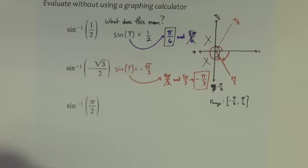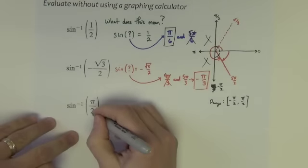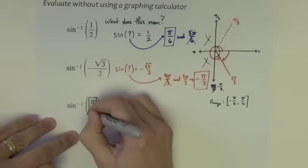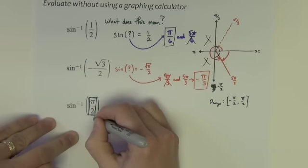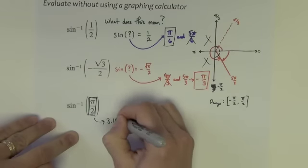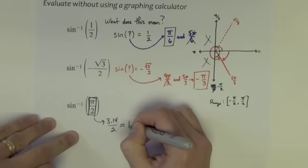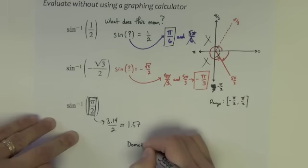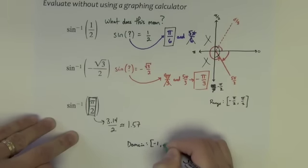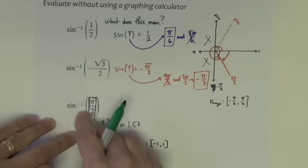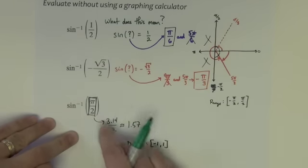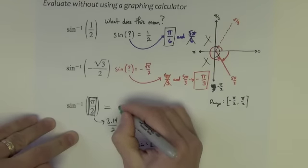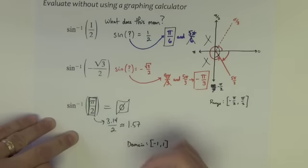Okay, the last one, sine inverse of pi over 2. Well, first of all, let's think of this number. Remember, if you were to do pi over 2 on your calculator, that would be like 3.14 divided by 2. It's approximately 1.57. Remember, we said the domain is only negative 1 to 1. I can't do the sine inverse of anything outside of this domain. So this actually is not possible.